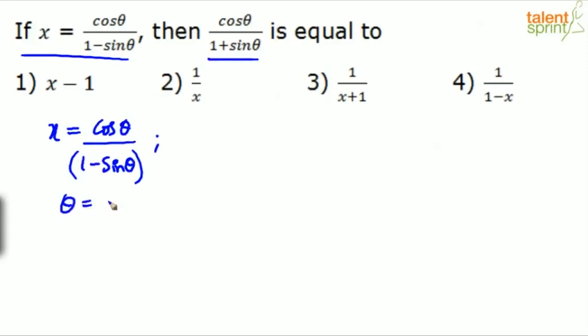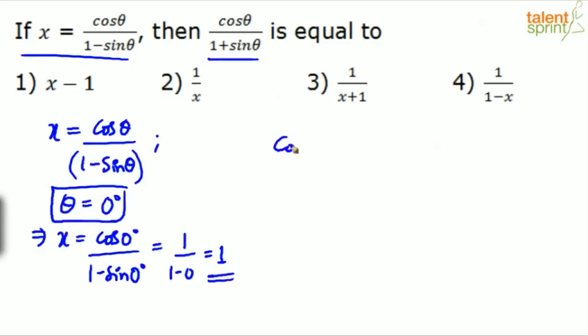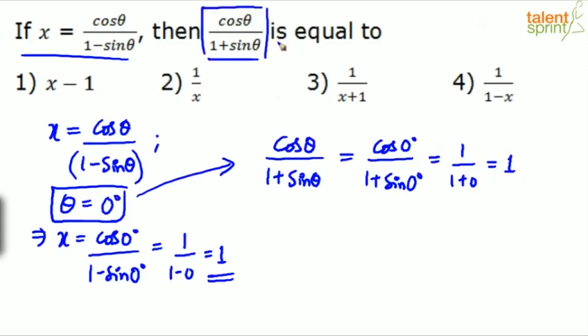So let us substitute. Theta equals 0 degrees implies x will be cos 0 degrees divided by 1 minus sine 0 degrees. Cos 0 is 1 divided by 1 minus 0 equals 1. Which means for theta 0 degrees, x will be equal to 1. What is he asking us to find out? Cos theta divided by 1 plus sine theta. You have to substitute the same theta here. This will be equal to cos 0 degrees divided by 1 plus sine 0 degrees, which is 1 by 1 plus 0, which is 1. This is actually equal to 1.